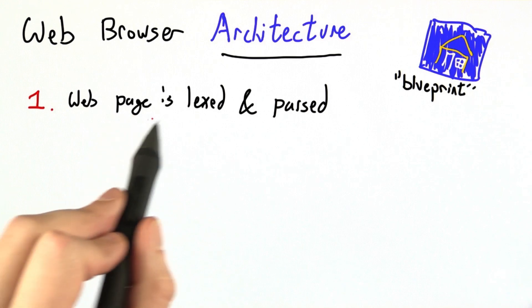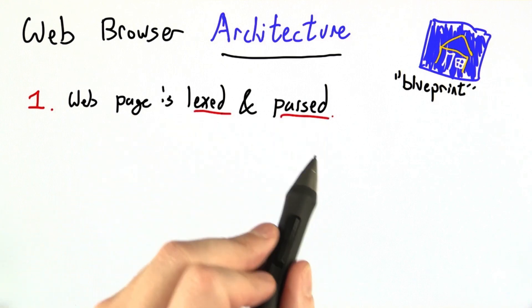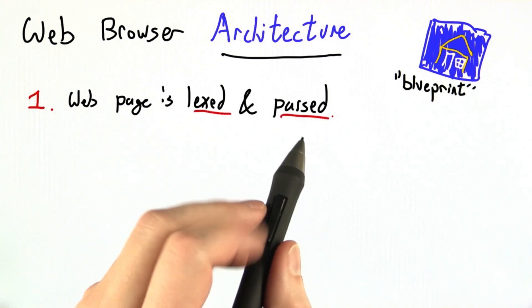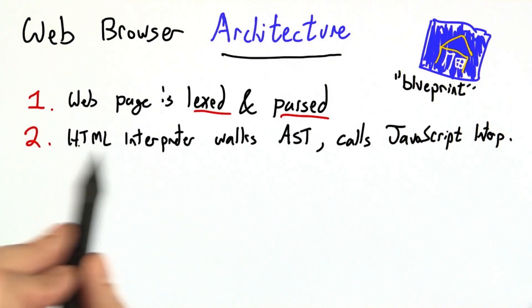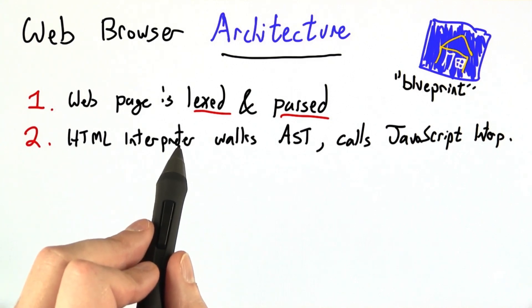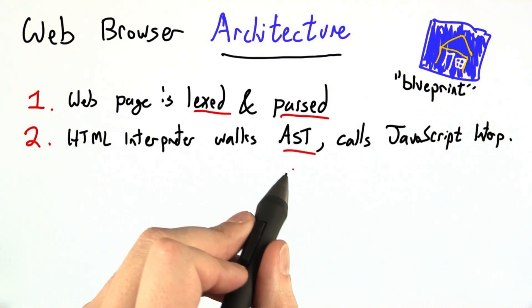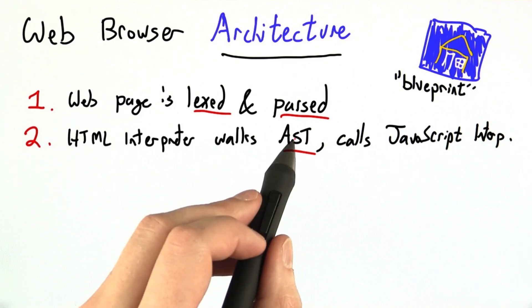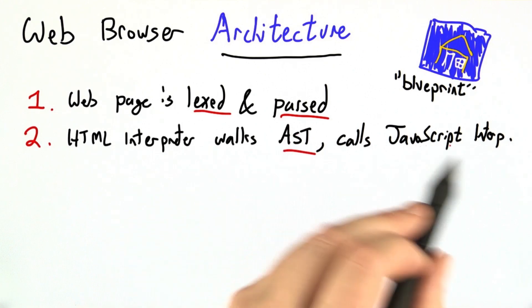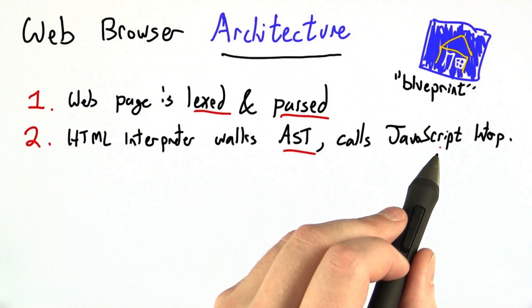Our first step is to find our web page and lex it and parse it until we have an abstract syntax tree. Most commonly, our HTML interpreter will walk over the abstract syntax tree that we got from the parsing, and it may find elements in there that are embedded JavaScript, so then we'll have to call the JavaScript interpreter on them.